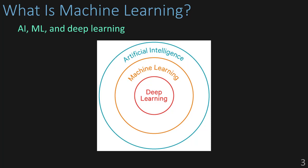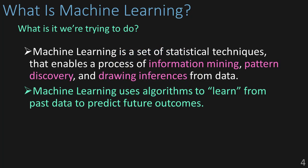Now that we've gotten that out of the way, let's move on. If we had to define machine learning, here's how it would go. Machine learning is a set of statistical techniques that enables a process of information mining, pattern discovery, and drawing inferences from data. Machine learning algorithms learn from past data to predict future outcomes, and of course this comes in a number of different forms.